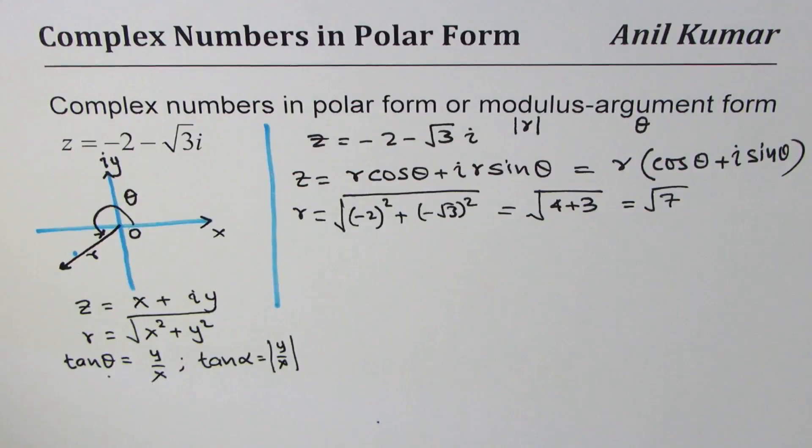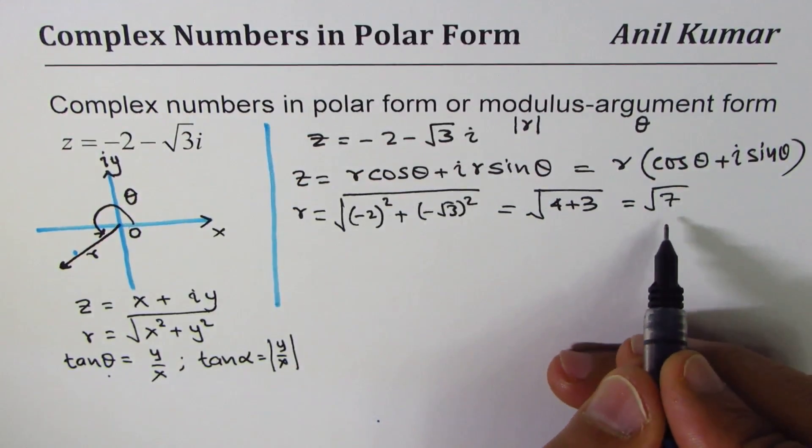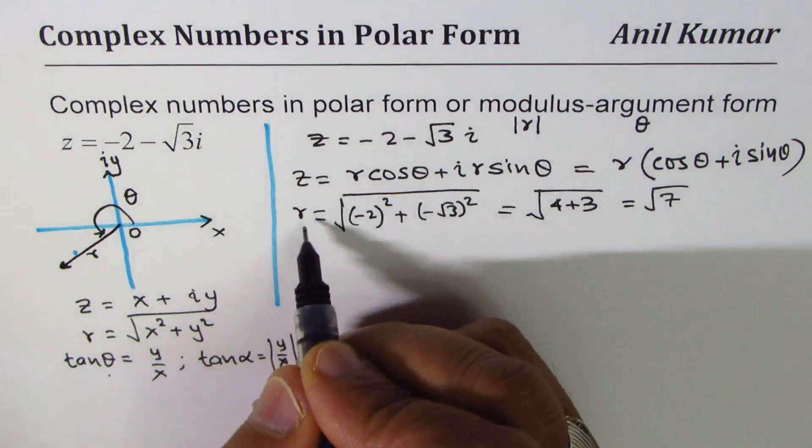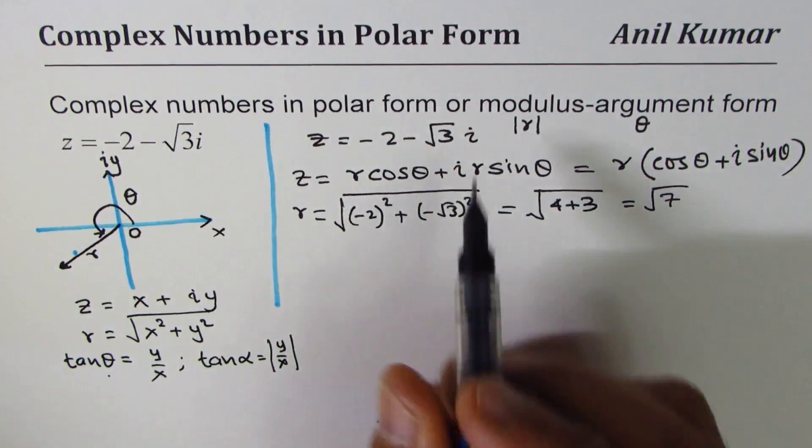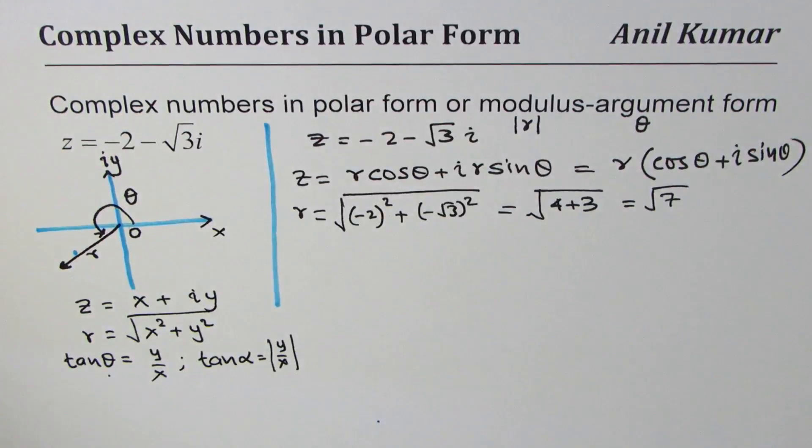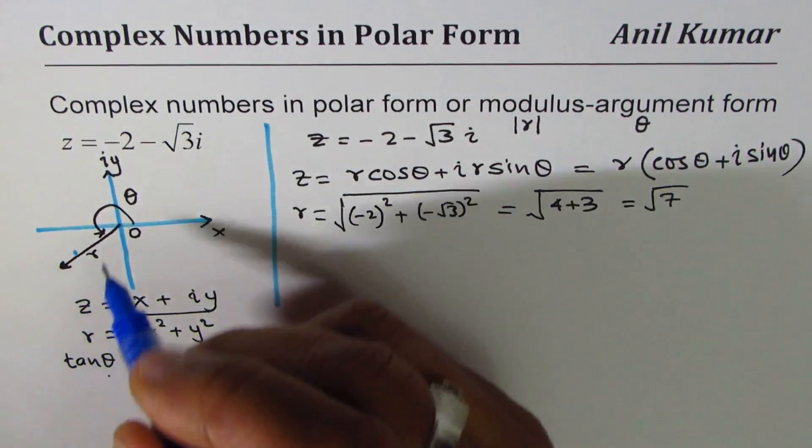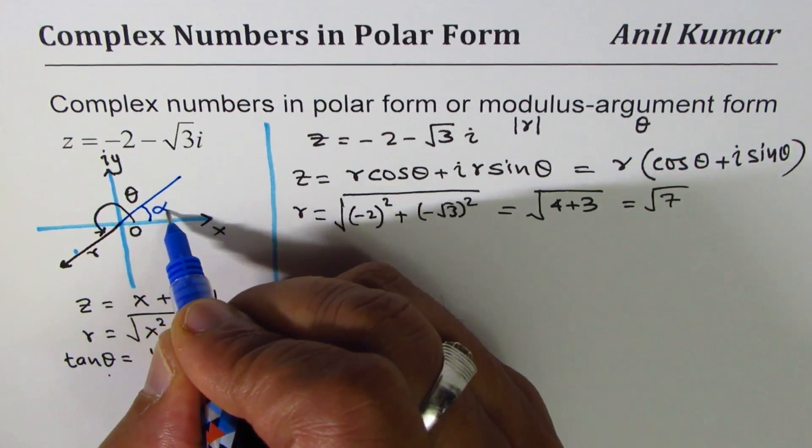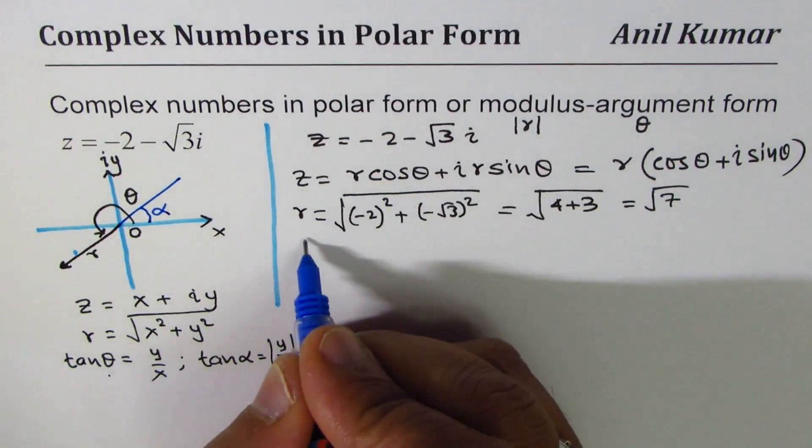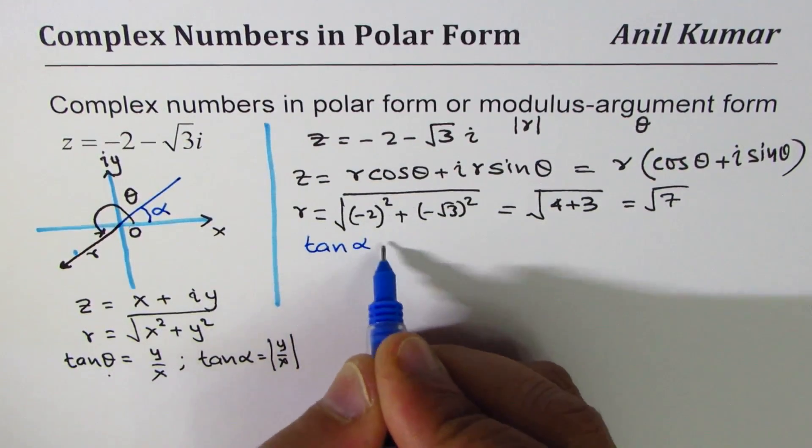That's the value of r, always taken positive. Now let's find θ. As we have always said, it's better to find the related acute angle α first, so tan α is equal to √3 over 2.